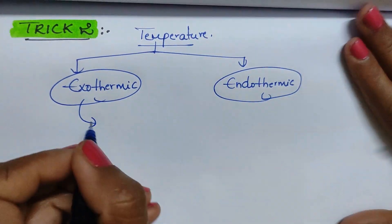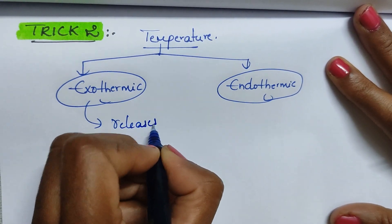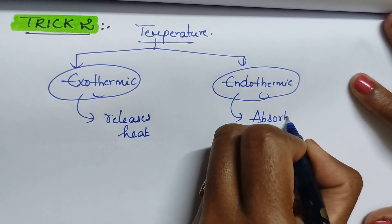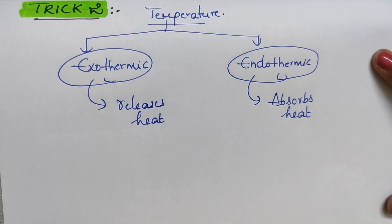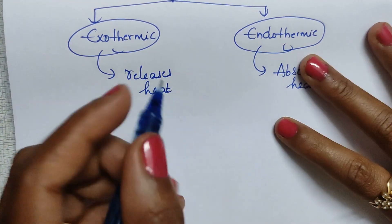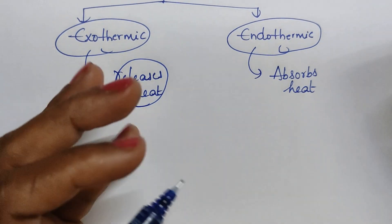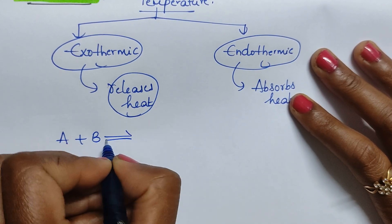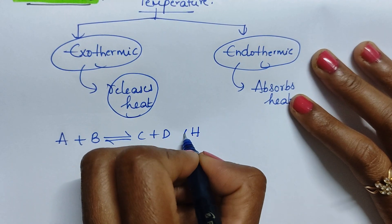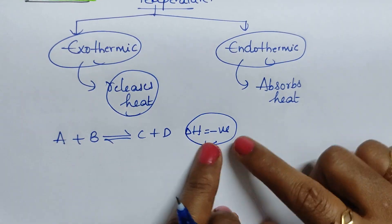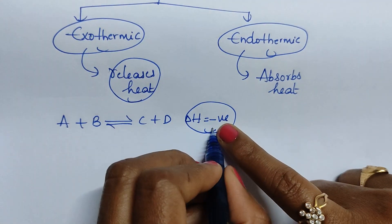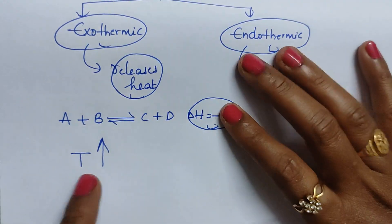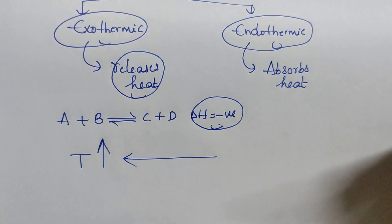An exothermic reaction is one which releases heat energy to the outside. An endothermic reaction is one which absorbs heat. If delta H is negative, the reaction is releasing energy outside, so it is exothermic. The reaction itself is already releasing energy, so if you increase the temperature, the reaction goes in the backward direction.